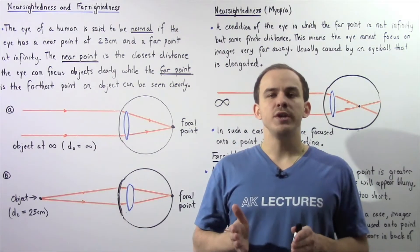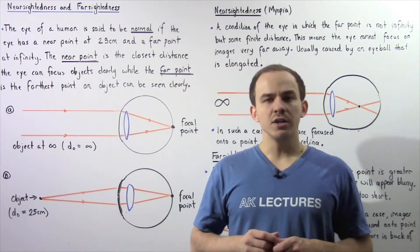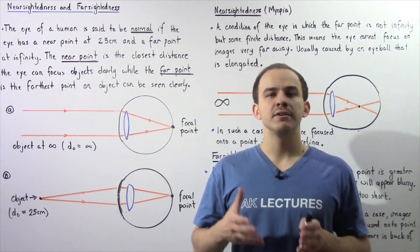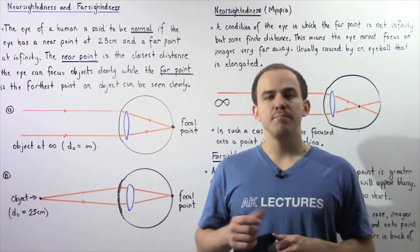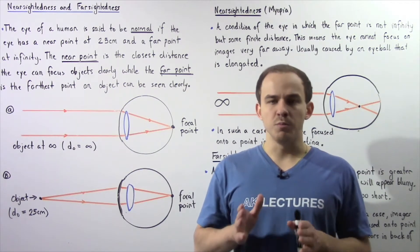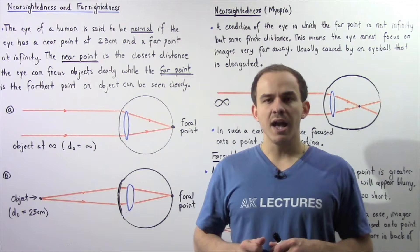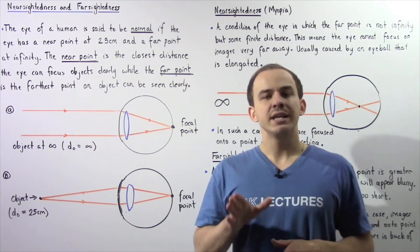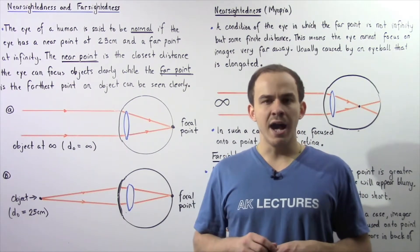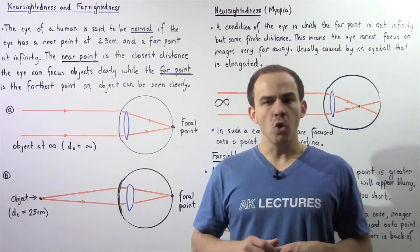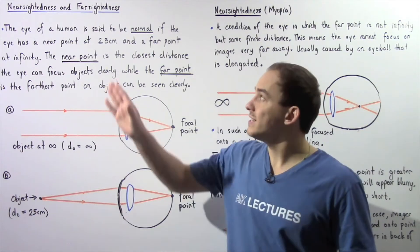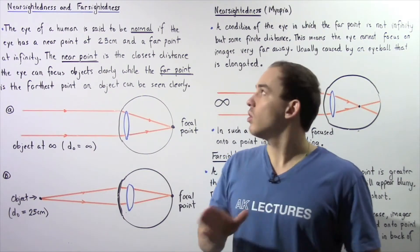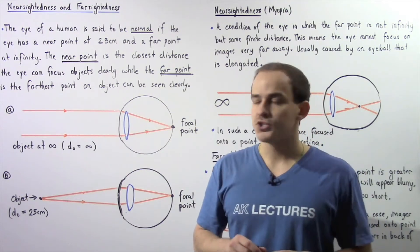In the previous lecture, we gave an introduction to the human eye and discussed the various types of components that make up the human eye. Now, let's discuss the two types of conditions that affect the eye, known as myopia, or nearsightedness, and hyperopia, or farsightedness.